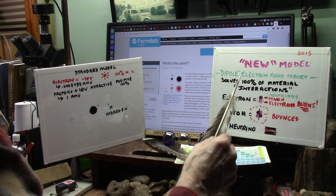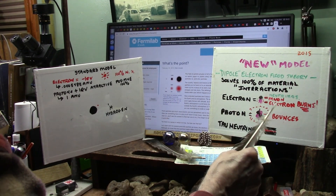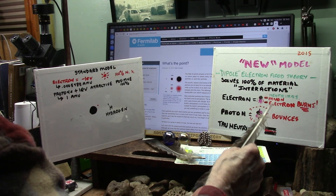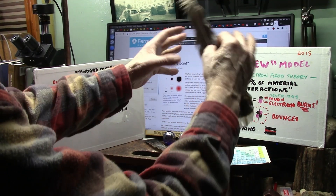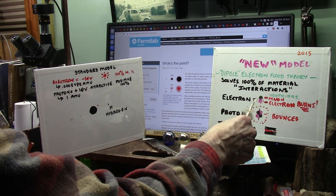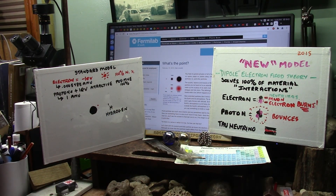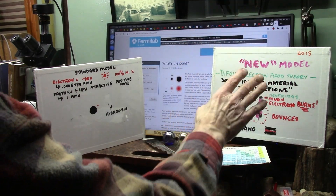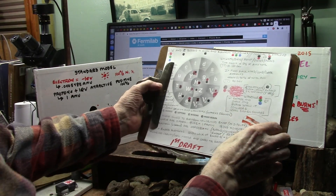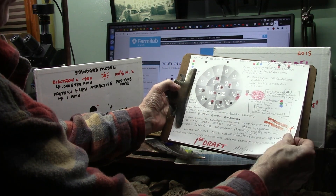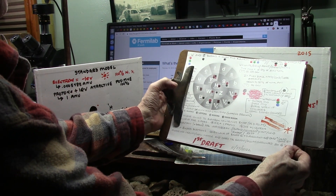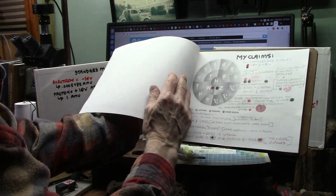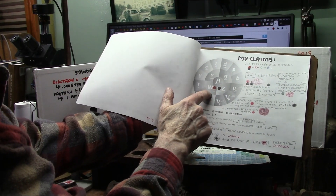Everything in the entire universe is made of these two particles. That's all that exists. So when they say they have a particle zoo, all they have is different chunks of these. It's not this simple — it is simple — but not that simple. This is what I'm working on right now. This is the first draft of how these particles really are in the Higgs model. But these are the only two that exist.